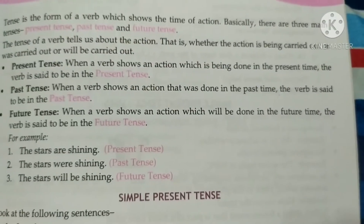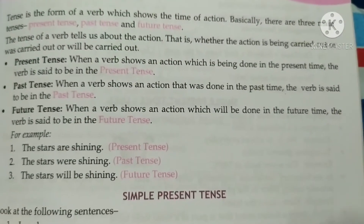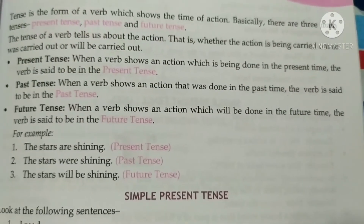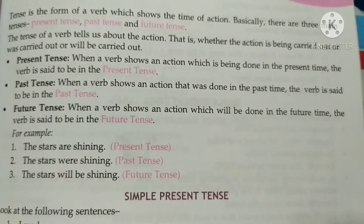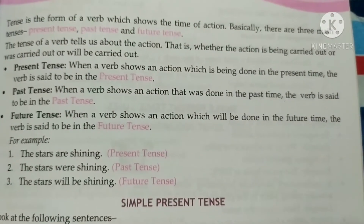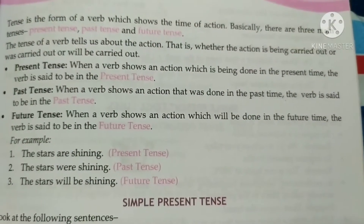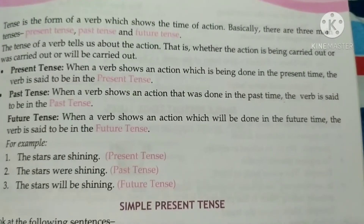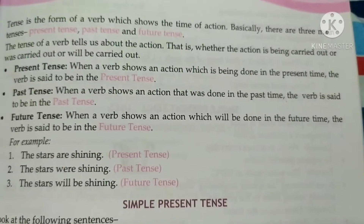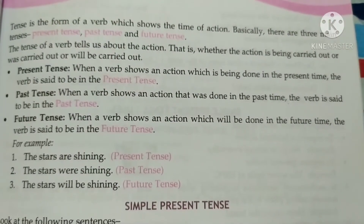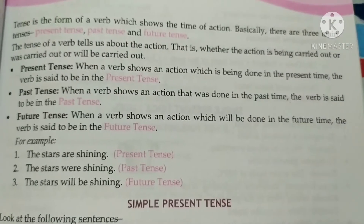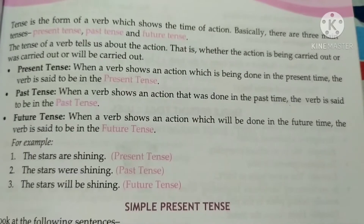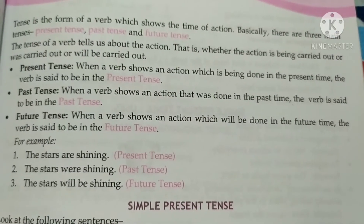Present tense: where a verb shows an action which is being done in the present time, the verb is said to be in present tense. Past tense: when a verb shows an action that was done in past time, the verb is said to be in past tense. Future tense: when a verb shows an action which will be done in future time, the verb is said to be in future tense. For example, 'The stars are shining' is present tense because the auxiliary verb is 'are'.